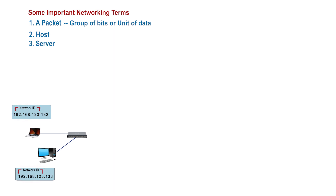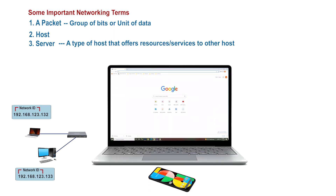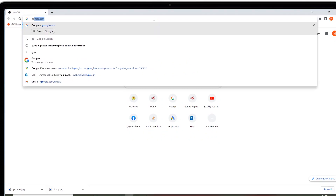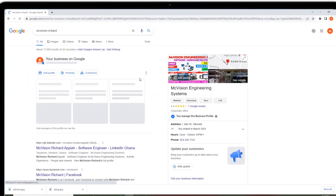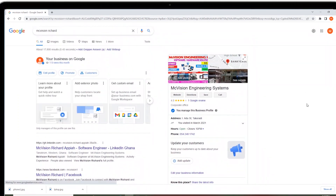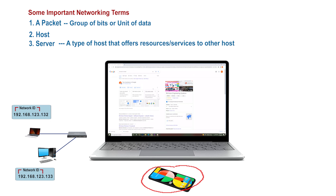Third, server. A server is a type of host that offers resources or services to other hosts. A real-world example is when you use your laptop, phone, or any other device to access information on the internet, say google.com — that means you are accessing information from a type of server called a web server. In this case, your laptop or phone becomes the client. We shall delve deep into servers as we progress in this course.